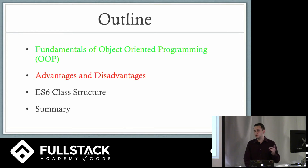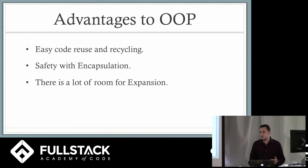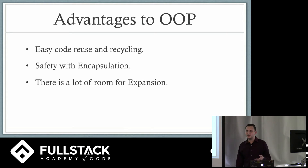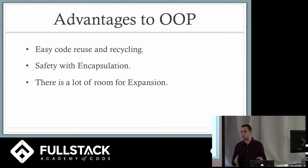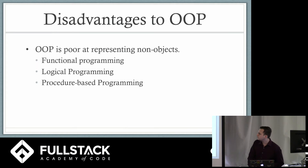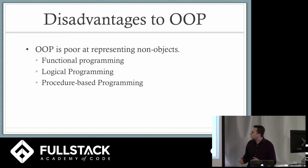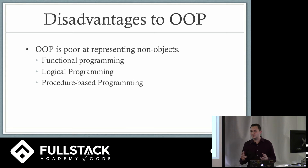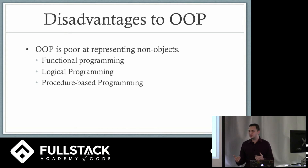So what are the advantages and disadvantages? First, there's really easy code reuse and recycling, and a lot of room for expansion. With this structure I can keep going down from SUV — maybe four-seater or eight-seater. There's also the safety provided by encapsulation: you're in charge of making sure every variable is set properly and that another programmer can't break that functionality. On the disadvantage side, OOP is poor at representing non-objects. Functional, logical, and procedure-based programming would be really inefficient in this model. Object literals solve a lot of problems in JavaScript that don't exist in many object-oriented languages, and those problems become much harder without them.